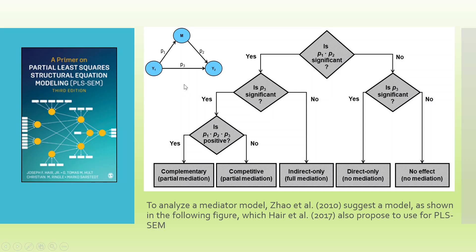Now, what can be the different scenarios of mediation? This model is suggested by Zhao et al. 2010 and is presented in the book 'A Primer on Partial Least Squares' by Professor Hair, Professor Hult, Professor Ringle, and Professor Sarstedt. We look at P1, P2, and P3. If P1 times P2 is significant and P3 is also significant, and all of P1, P2, P3 are positive, then it is known as complementary partial mediation. If any one of them is negative, then it is known as competitive partial mediation.